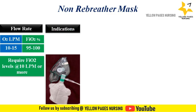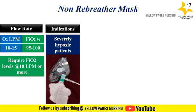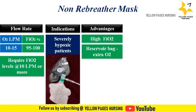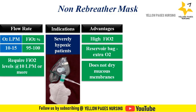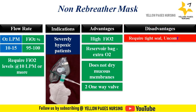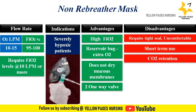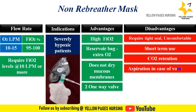Indications for non-rebreather mask include severely hypoxic patients who are ventilating well. It is best utilized in acute cardiopulmonary emergencies where a high FiO2 is necessary, such as cardiac arrest, shock, sepsis, and pulmonary embolus. Advantages include that it provides high FiO2, the reservoir bag provides extra oxygen when the client breathes faster or deeper, and it does not dry the mucous membrane in the short term. Disadvantages include it requires a tight seal, is uncomfortable, can only be used short-term, and malfunction can cause CO2 buildup and suffocation.